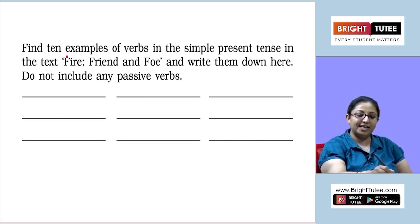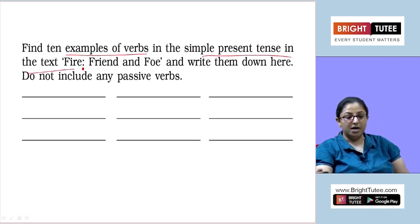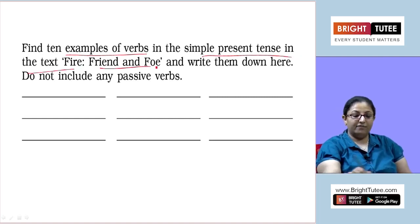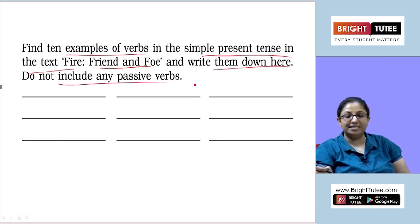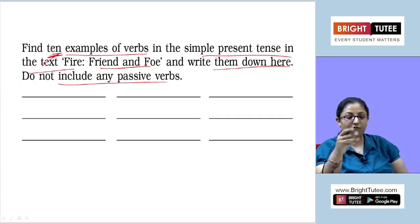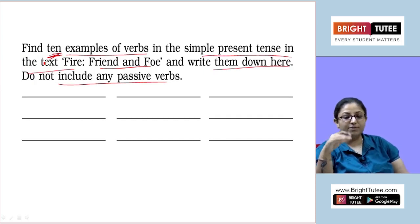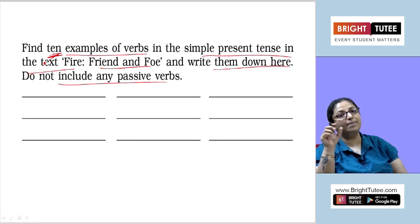Find ten examples of verbs in the simple present tense in the text 'Fire: Friend and Foe' and write them down. Do not include any passive verbs. I will give you three examples from this chapter. We have to find verbs in the form of simple present tense. Make sure you don't use any passive verbs.